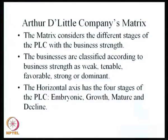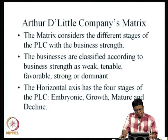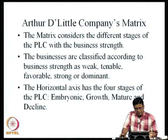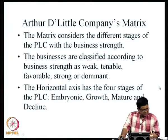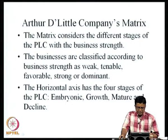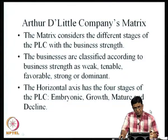Welcome to this class. In the last class, we discussed the Arthur D. Little Company's portfolio matrix. It makes use of the different stages of the PLC with the business strength. The businesses are classified according to business strength as weak, tenable, favorable, strong, or dominant on the vertical axis. The horizontal axis has the four stages of the PLC: embryonic, growth, mature, and decline.